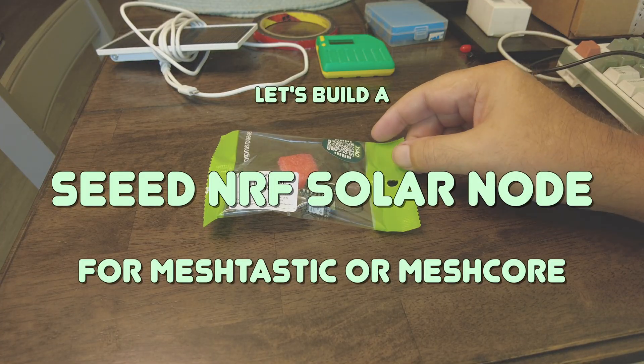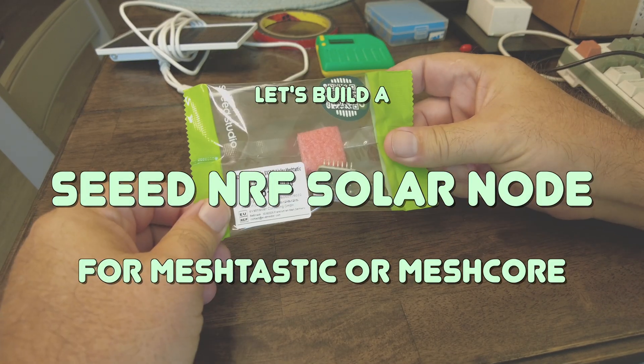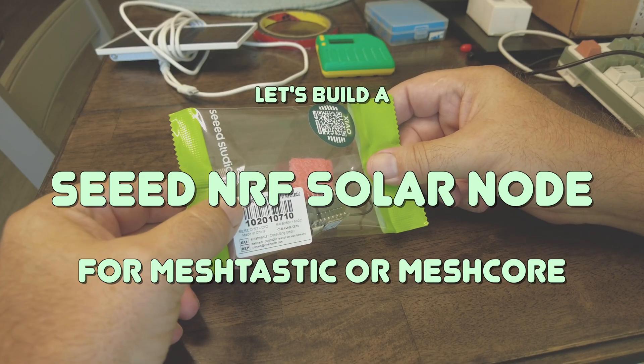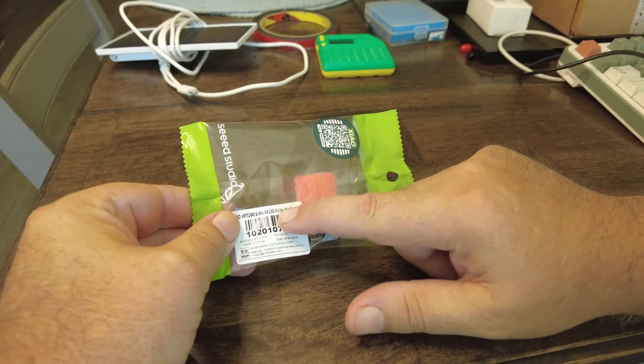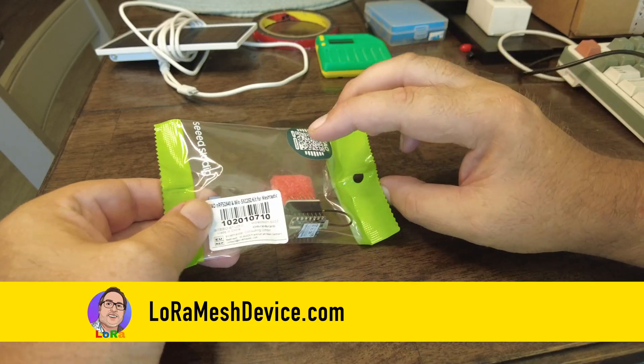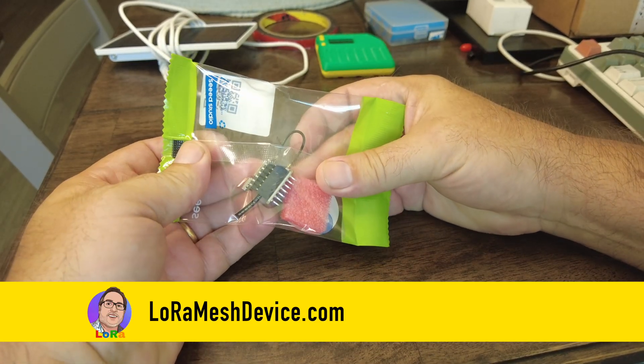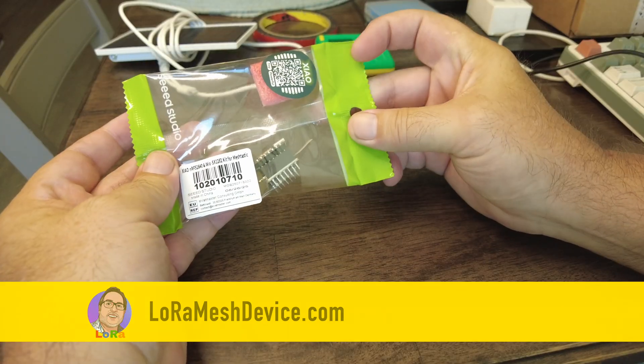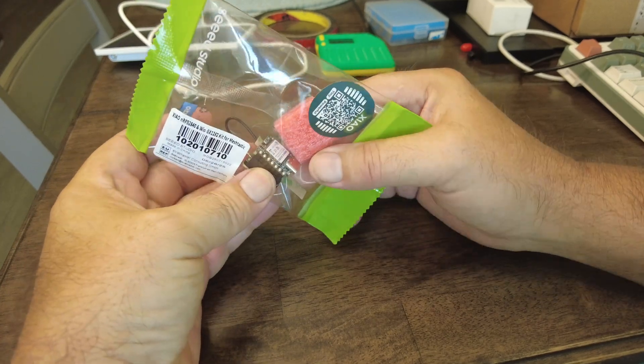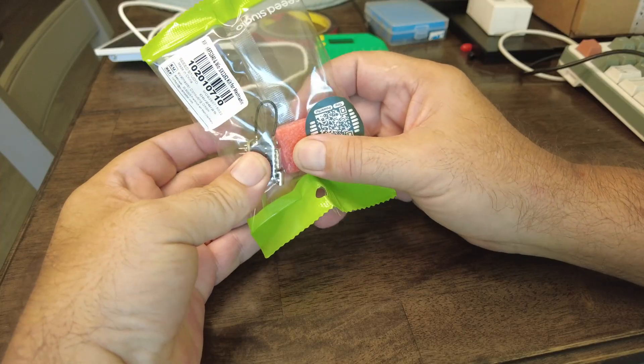Hello everyone, welcome back to the channel. Today I got some of these little Seed NRF52840 plus SX1262 tiny little nodes that I thought I'd build a little solar node, a Meshtastic or MeshCore solar node with it.